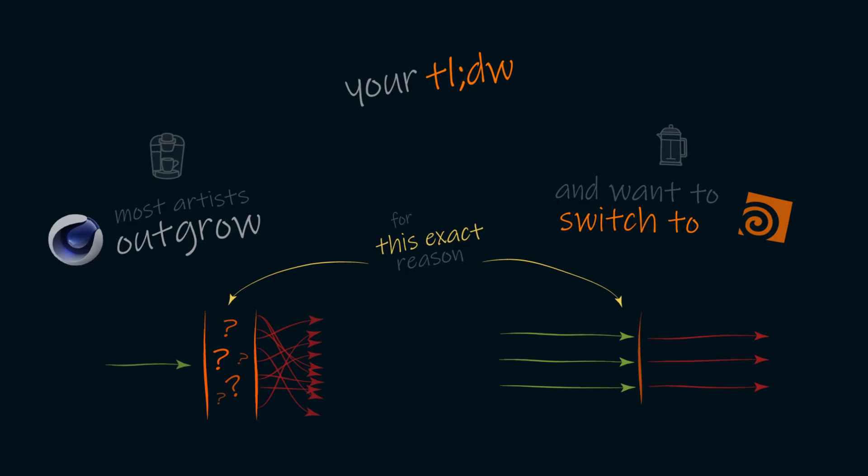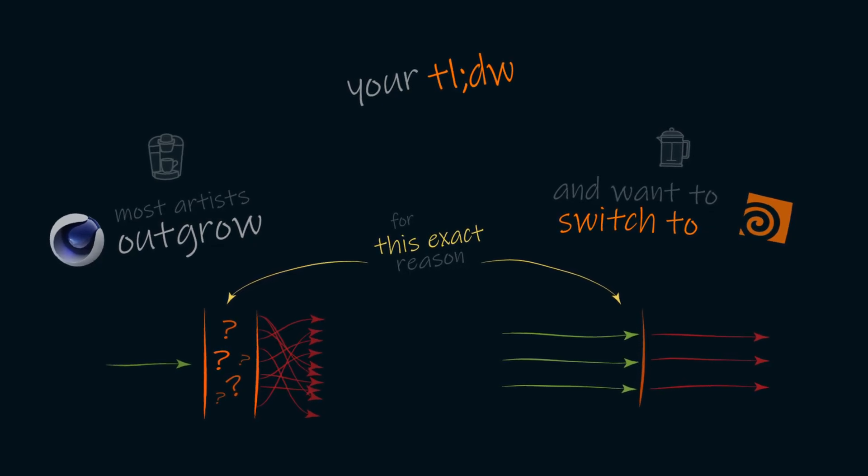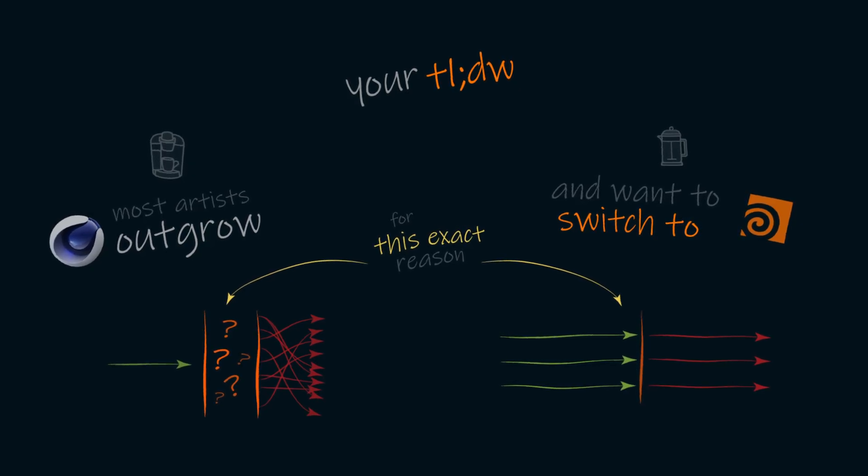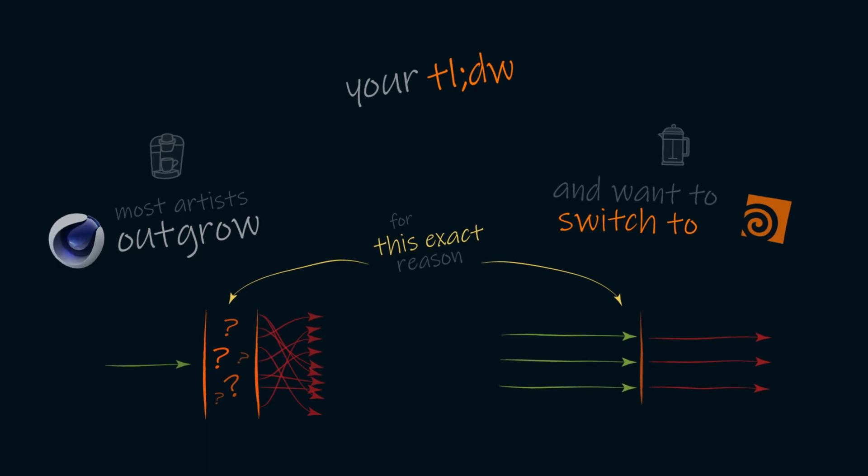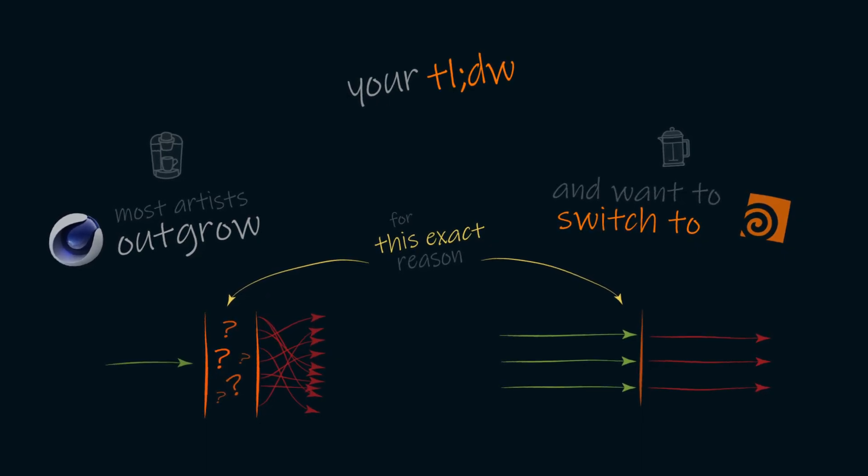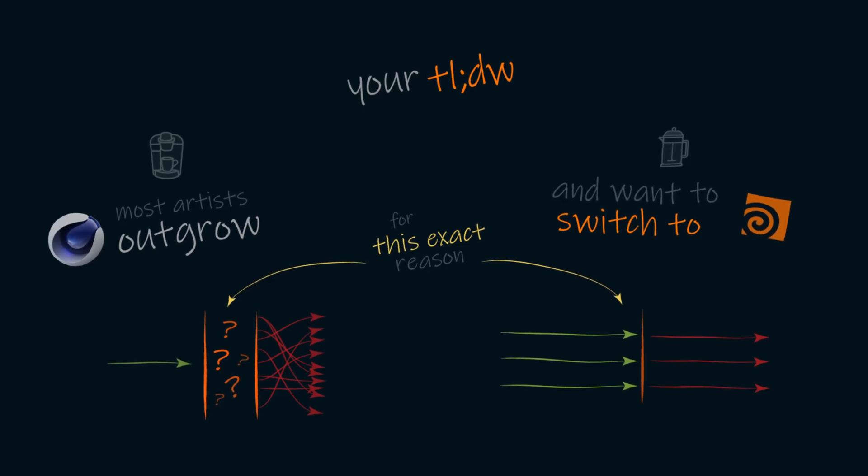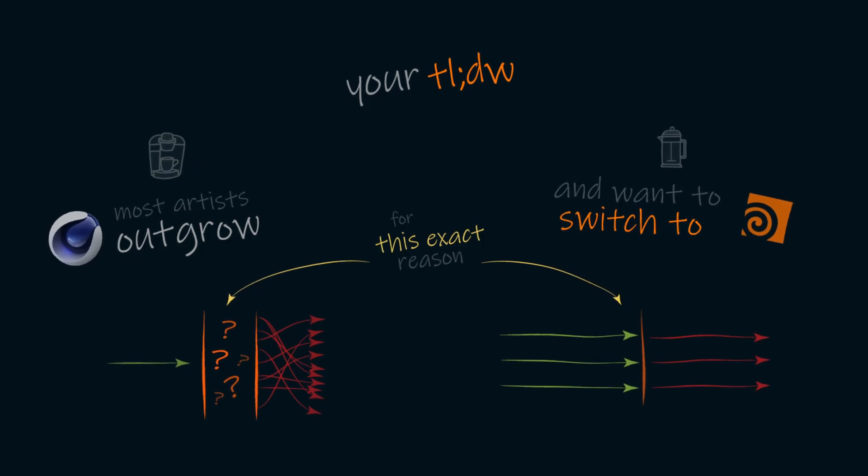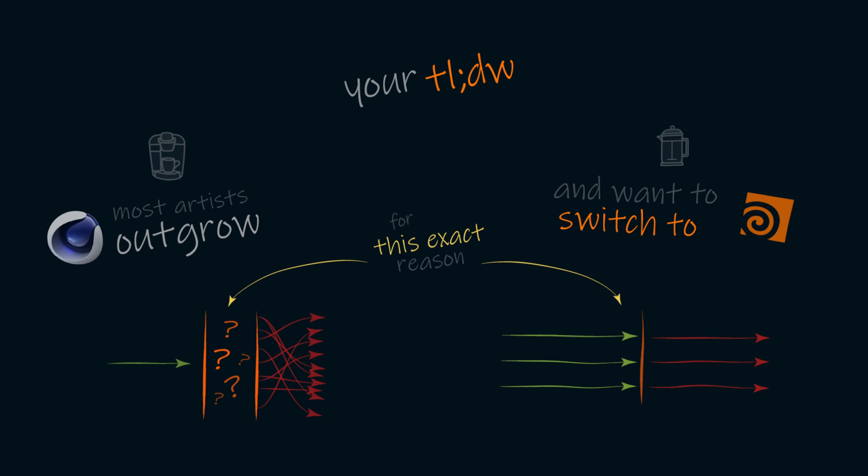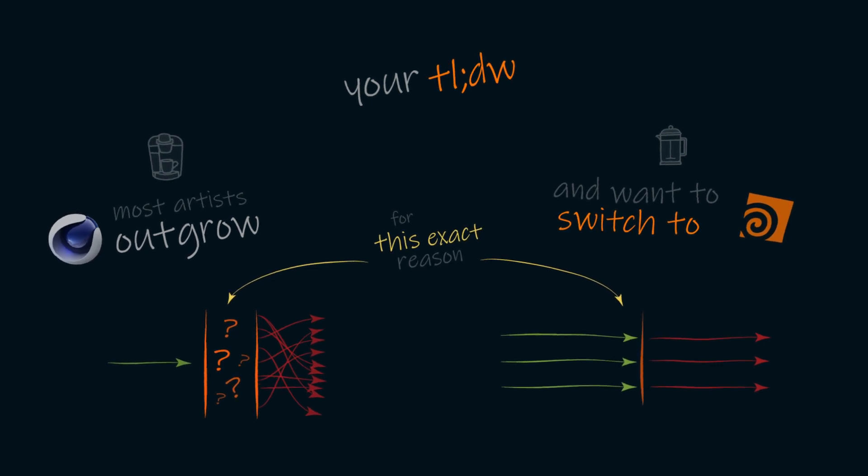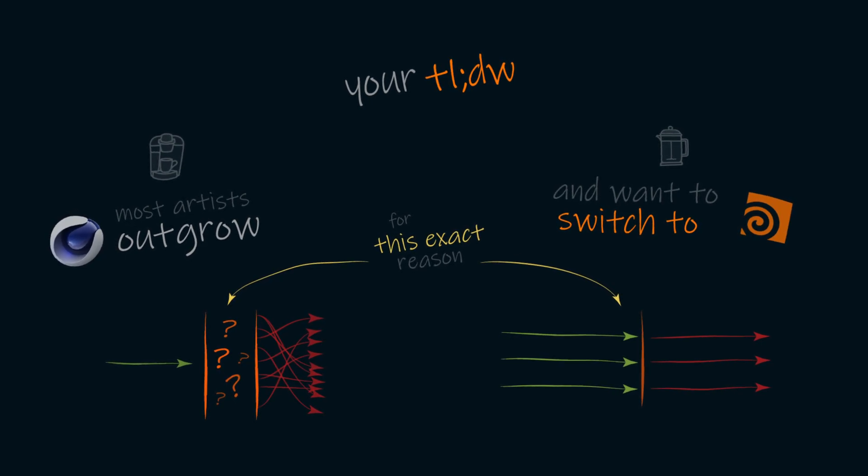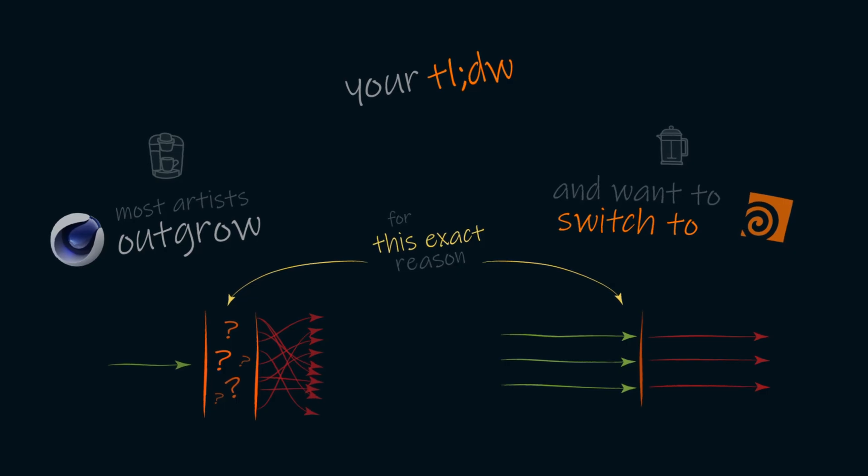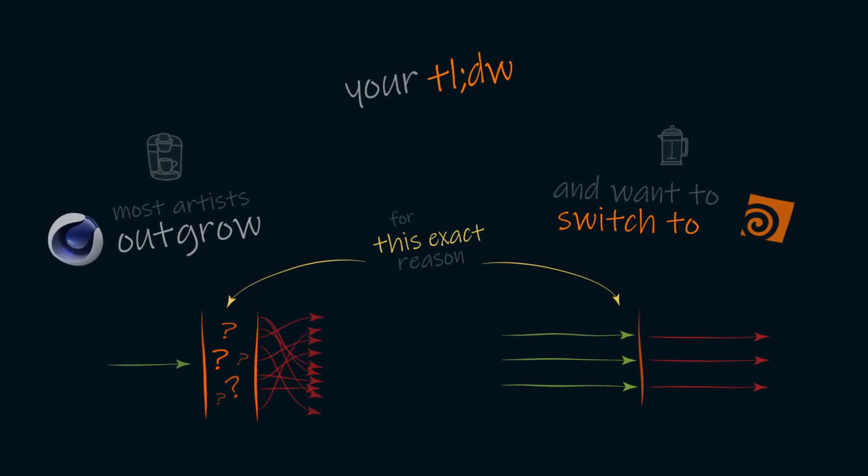Now, for your too-long-didn't-watch, most artists, myself included, outgrow Cinema 4D because they've become limited by the abstractions that Cinema 4D provides. Instead of their input actions and ideas, directly translating to the output actions and result of their renders, their scenes, and their 3D projects, they spend more time fighting the software, trying to get it to do what they want it to do, instead of working on their actual ideas. And eventually, they want to experiment and try more complex ideas, but they quickly find out that the software wasn't built for that.